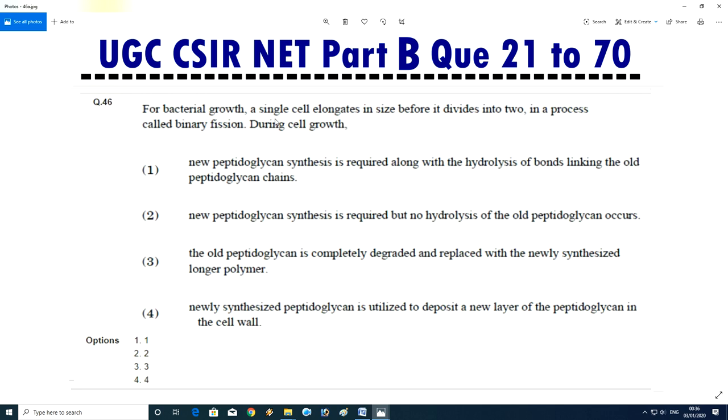Question No.47 - For the bacterial growth, the single cell elongates in size before it is divided into two in a process called binary fission during cell growth. The new peptidoglycan synthesis is required along with hydrolysis of bond linking to old peptidoglycan chain. New peptidoglycan synthesis is required but no hydrolysis of old peptidoglycan occurs. The old peptidoglycan is completely degraded and replaced with a new synthesized longer polymer. A new synthesized peptidoglycan is utilized and deposits new layer of peptidoglycan in the cell wall. Answer is A, new peptidoglycan synthesis required along with hydrolysis of bond linking in old peptidoglycan chain.